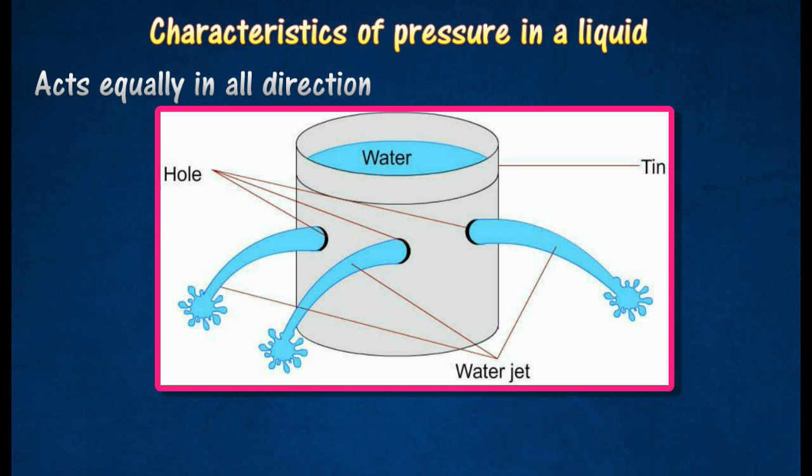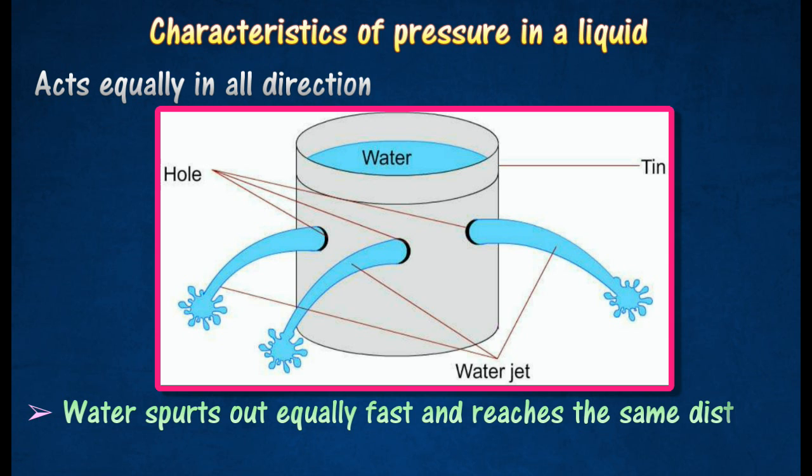When the tin is drilled with several identical holes at the same height, water will spurt out to reach equal distances from the circumference of the base at equal speeds. This shows that the pressure at any point in a liquid acts equally in all directions.